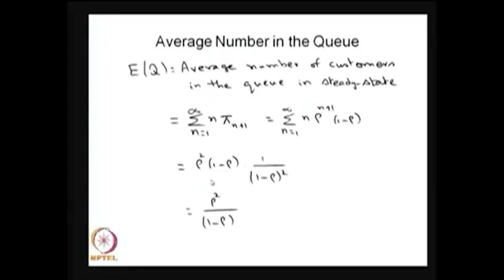One can also find the average number in the queue. The letter Q is a random variable, and here we are finding the expectation of Q, that is the average number of customers in the queue — meaning how many customers are waiting before getting service. With one server in the system, whenever service is ongoing all other arriving customers will be queued. When there are n plus 1 customers in the system, n people are in the queue; therefore the average is the summation of n times pi_{n+1}. Substituting pi_{n+1} from the stationary distribution and simplifying gives the average number of customers in the queue.